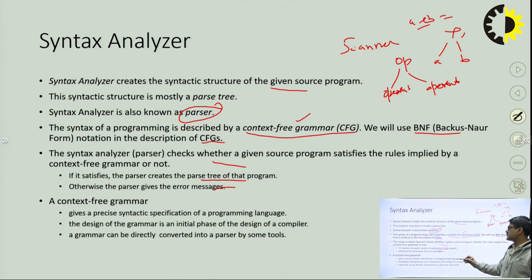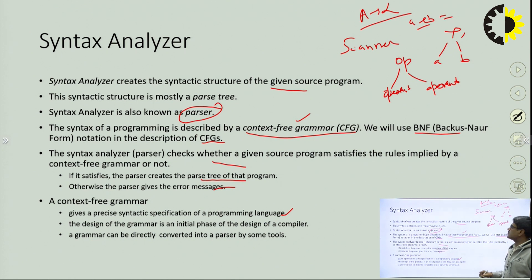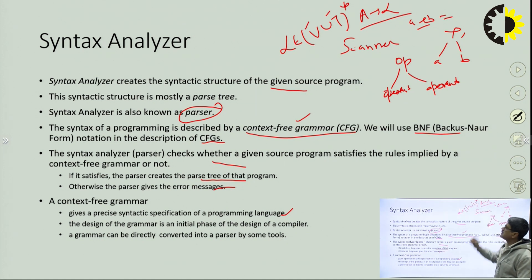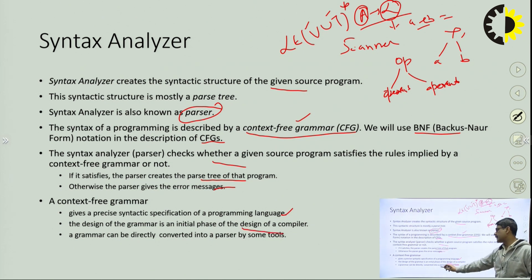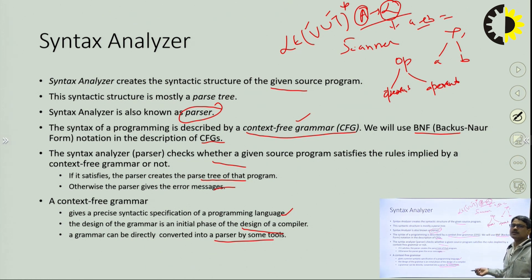Context-free grammar gives a precise syntactic specification of a programming language. It is defined as A produces alpha, where alpha belongs to V union T*, where V is the number of variables and T is the number of terminals. Whatever the right-hand side contains, generated by a single variable, is called context-free grammar. The designing of grammar is an initial phase of compiler design. A grammar can be directly converted into a parser by some tools.